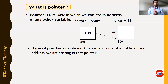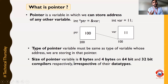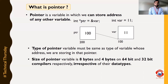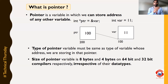Pointer type should be the same as the variable type whose address you are going to store inside that pointer variable. Now let us talk about the second term: the size of a pointer variable — how much space it is going to take inside memory. Irrespective of data type, every pointer will take 8 bytes or 4 bytes of space inside memory, depending on which compiler you are using. If you are using a 64-bit compiler, the size of pointer is 8 bytes, and if you are using a 32-bit compiler, the size of your pointer variable is 4 bytes.